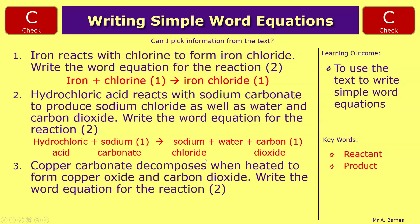And then finally, copper carbonate decomposes when heated to form copper oxide and carbon dioxide. So the only reactant you've got here is copper carbonate. Decomposes means broken down, so there's your arrow. And then copper oxide plus carbon dioxide.